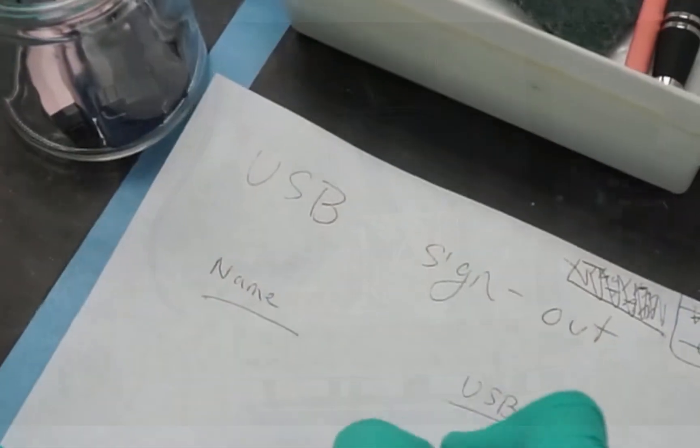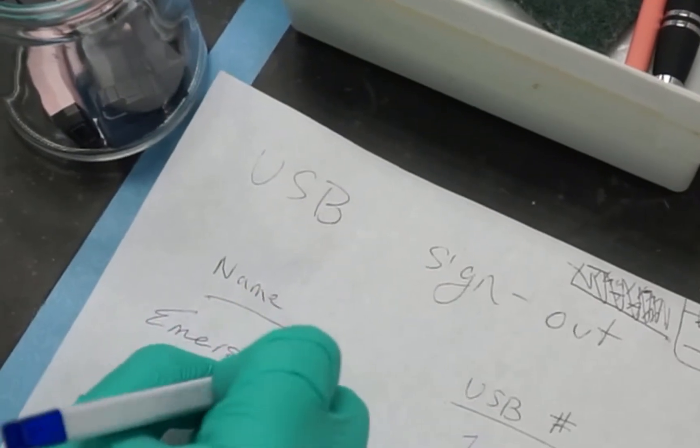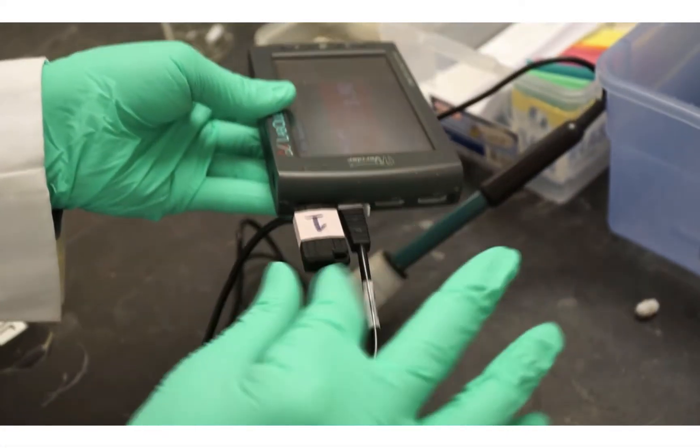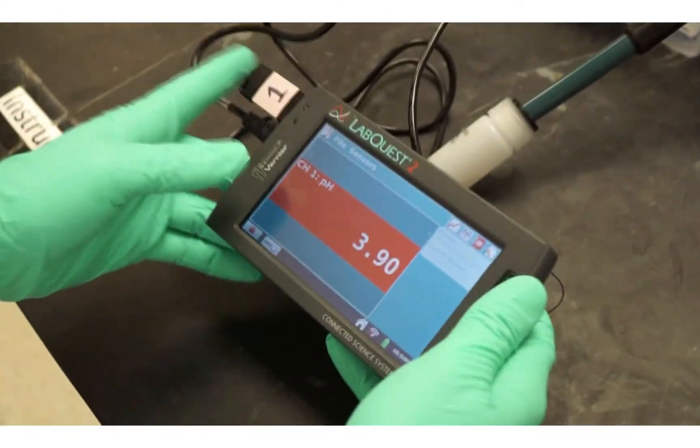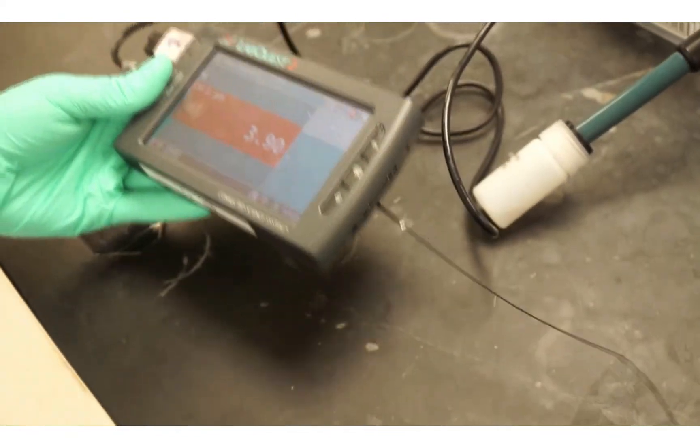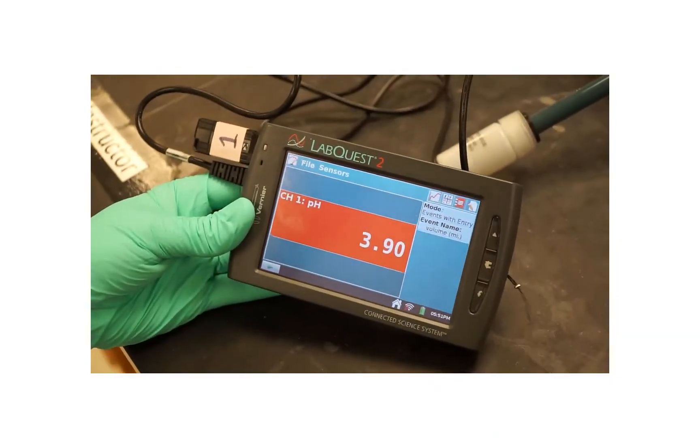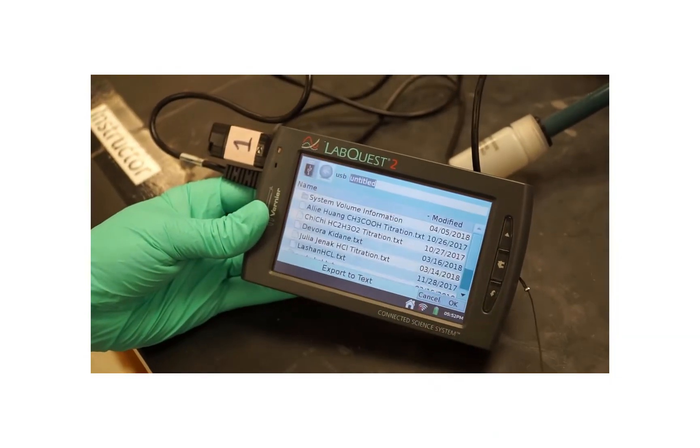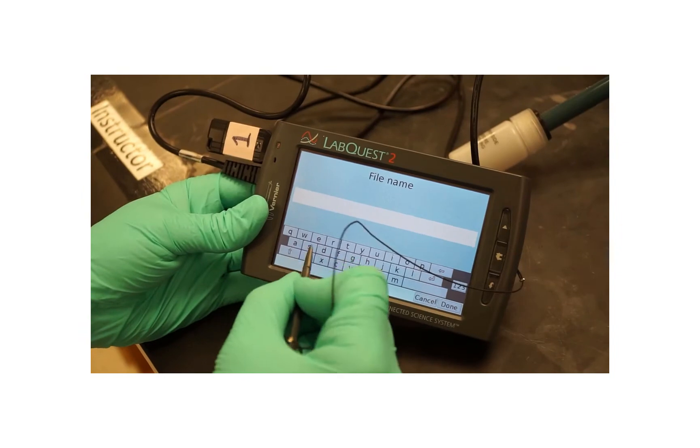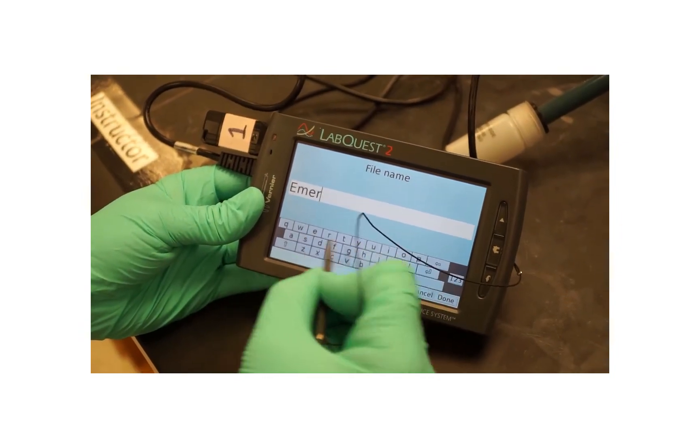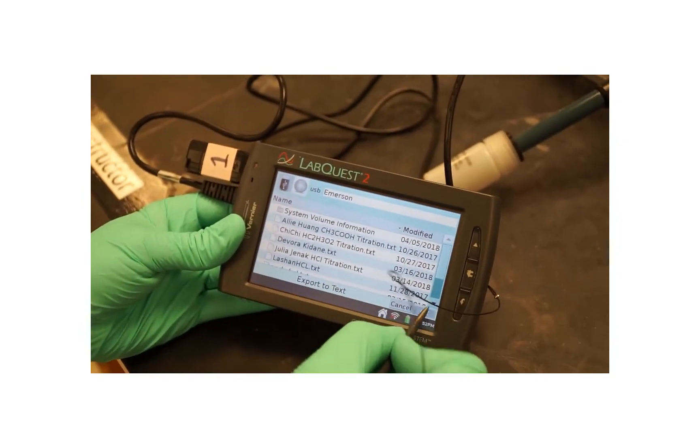Check out a USB drive from the front of the lab. While your collected data is still on the LabQuest screen, insert your USB drive. Export your data to the drive as a text file with your name as the file name. Make sure you choose Export or the data will not transfer appropriately. Click Done, then click OK.